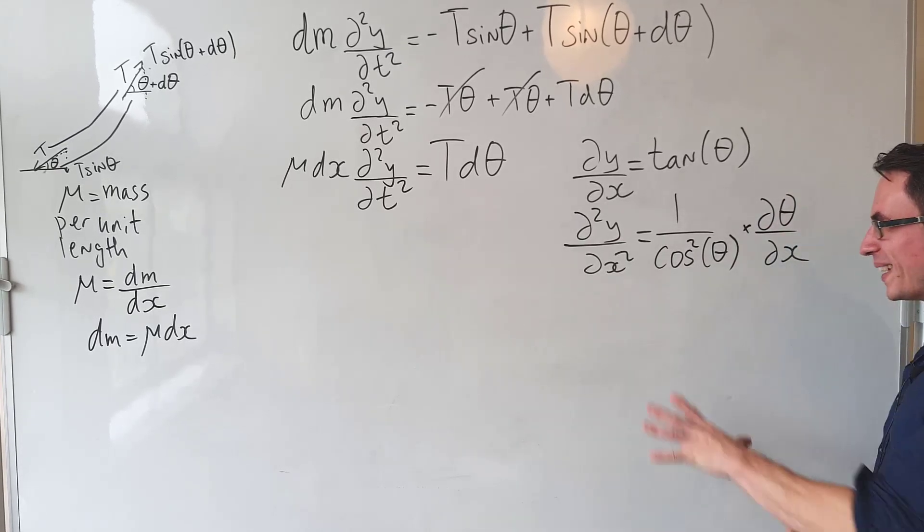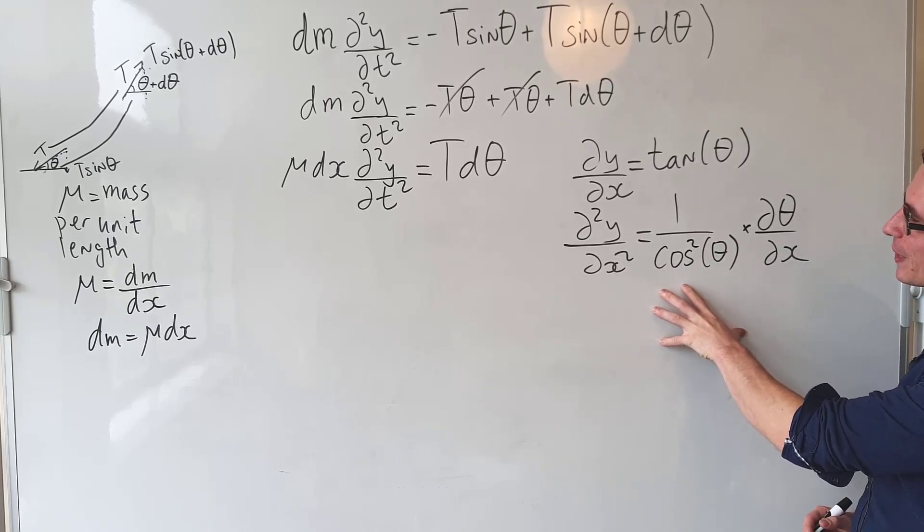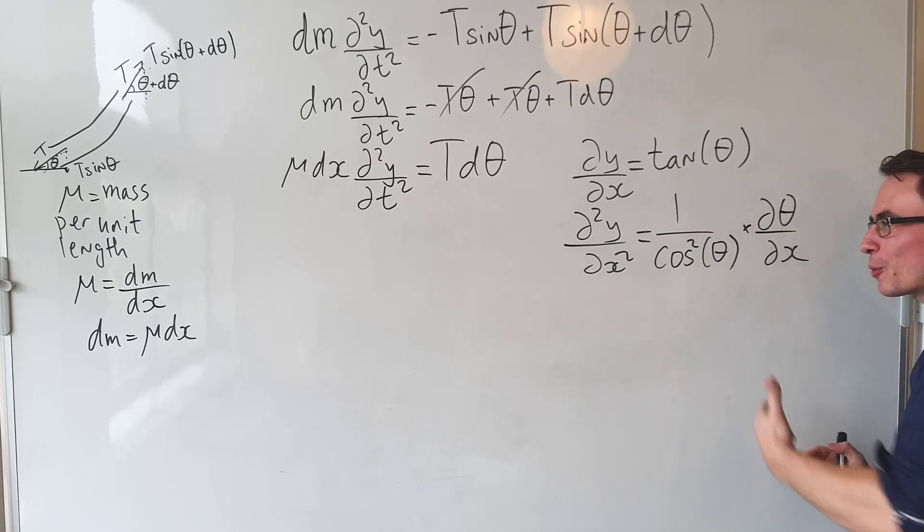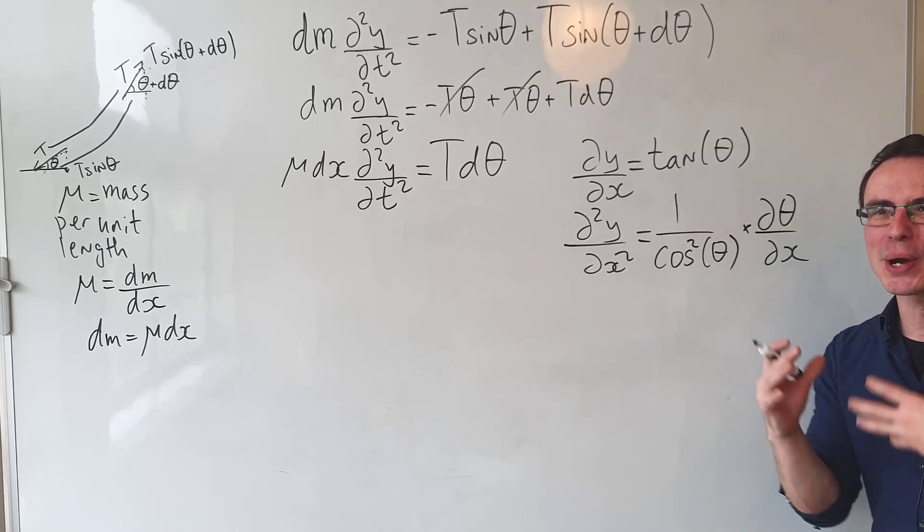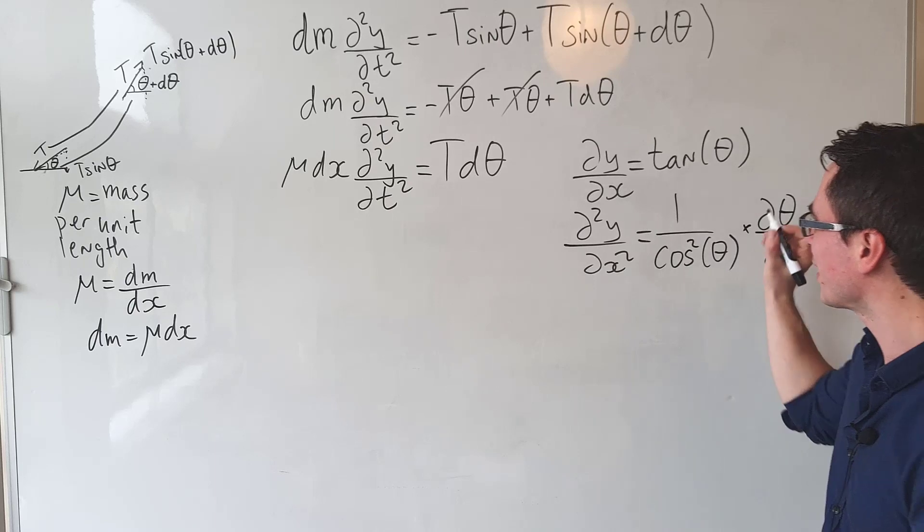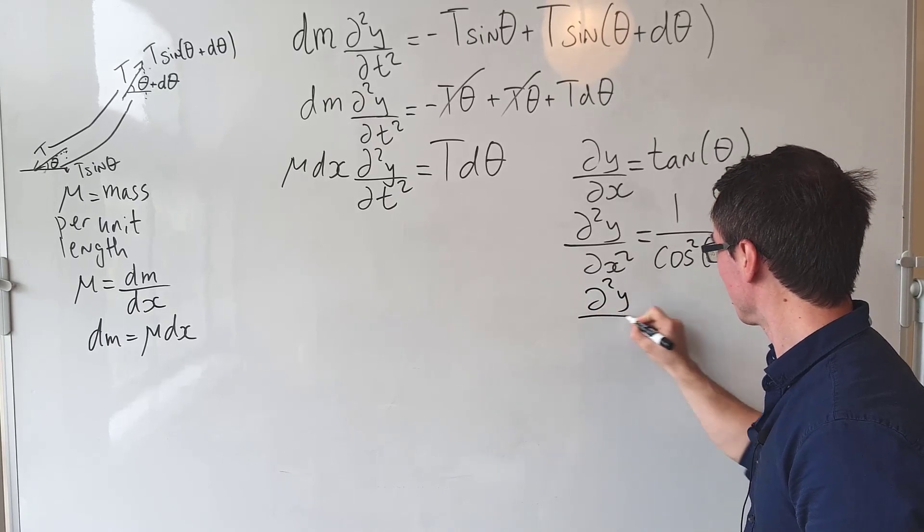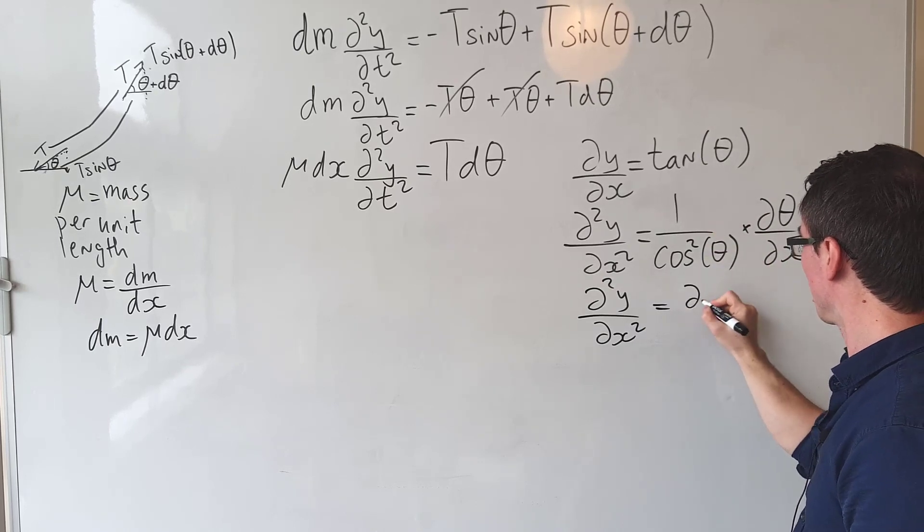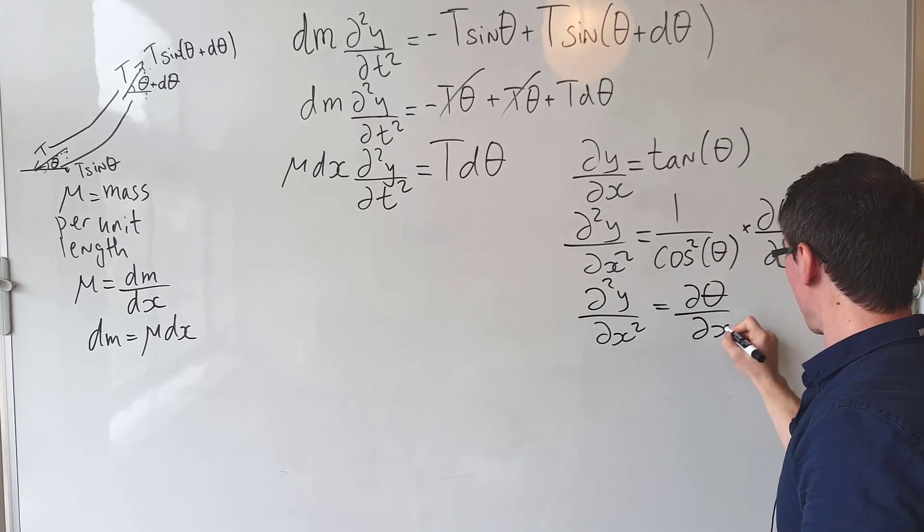Remember though, we're dealing in a case of really small angles, and when theta is really small, 1/cos² is actually going to be approximately equal to 1. Therefore the second derivative with respect to x will just be equal to 1 times d theta/dx.